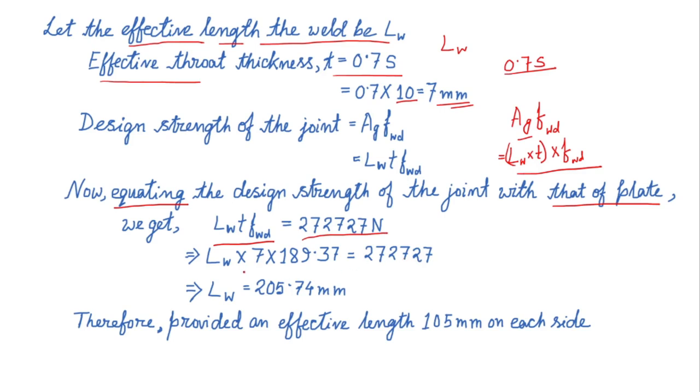That is why I have equated design strength of the joint with the strength of the plate. By putting the values of t and fwd, I shall get the value of Lw, which is 205.74 mm. So remember this is the total length of the weld to be provided in the joint.